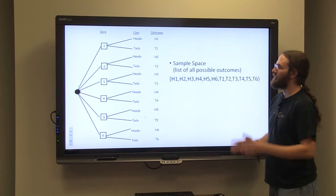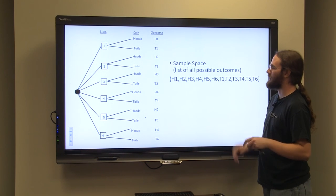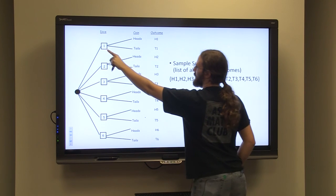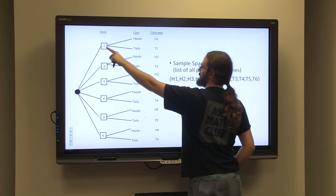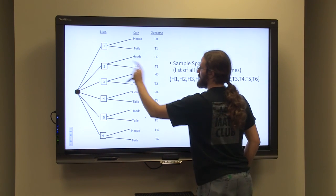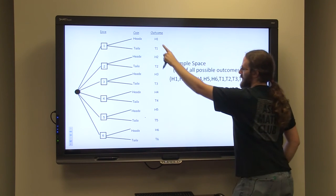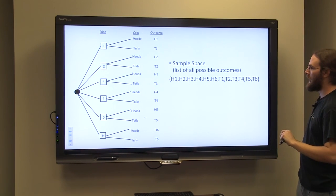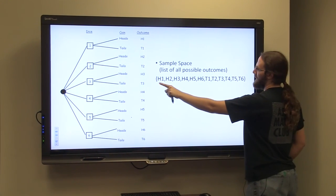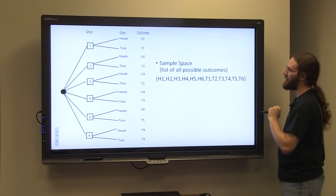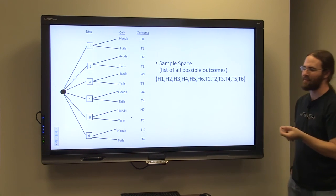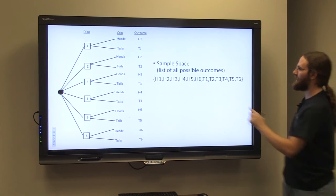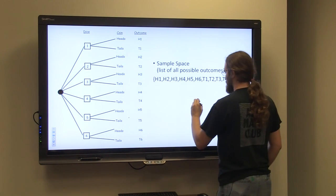If you're looking at the total number of outcomes, you can flip a head and roll a one, flip tails and a one, and so on. I have all twelve outcomes listed here in what we call a sample space. A sample space is simply a listing of all possible outcomes.